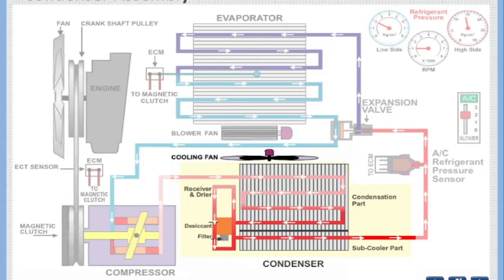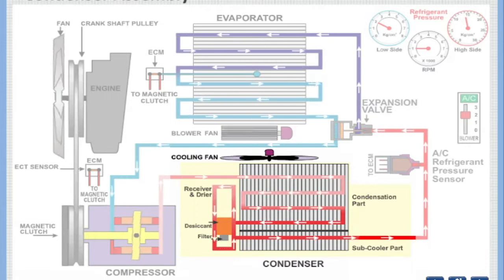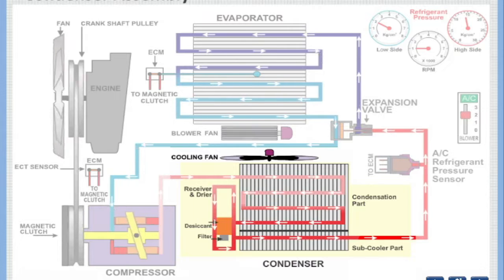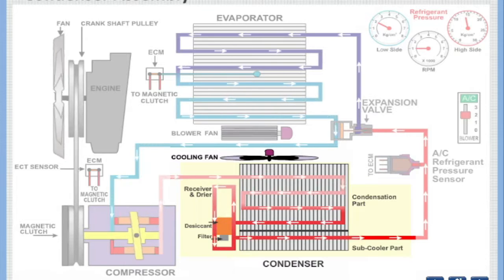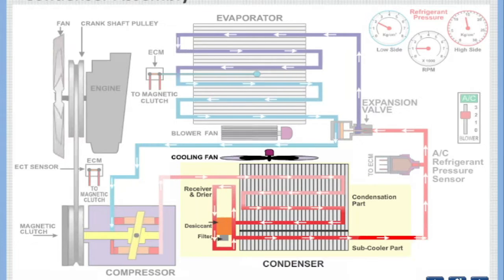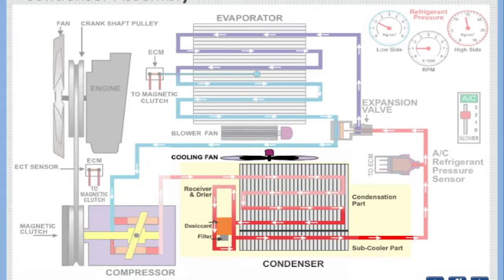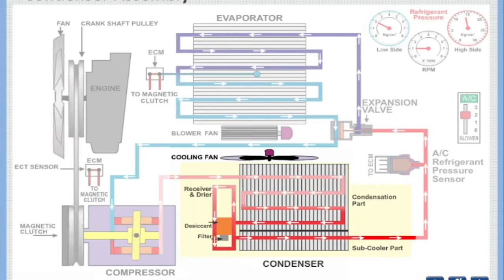After compressor, the high-pressure and high-temperature refrigerant gas enters the condensation part of condenser assembly. After cooling, the high-pressure liquid enters receiver and dryer unit.